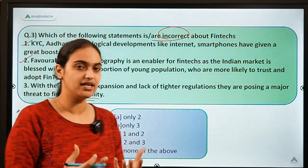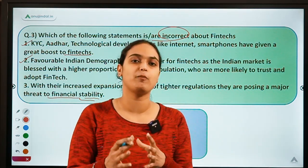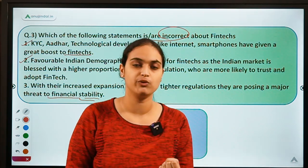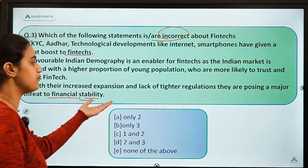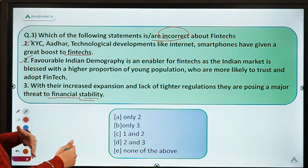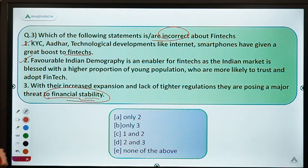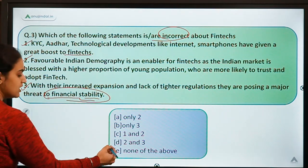Obviously fintechs are expanding, but we are still lacking a proper regulatory setup. If we have stronger regulations, we will be able to handle them in a better manner. So that third statement is correct. Since we had to identify the incorrect statements, and none of these statements is incorrect — all of them are correct — the answer is option E.